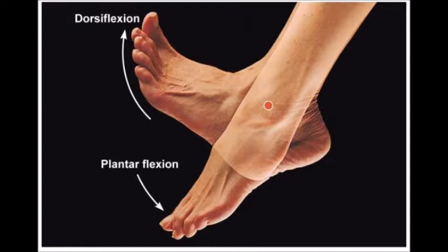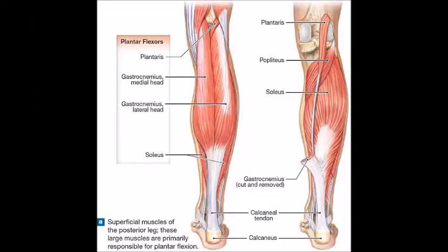The three muscles involved are the gastrocnemius, the soleus, and the plantaris, which make up the triceps surae. All three connect distally to the calcaneal tendon.